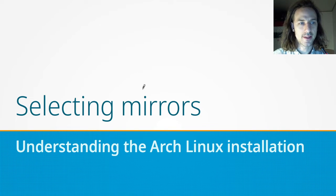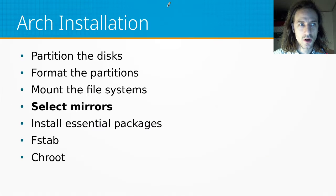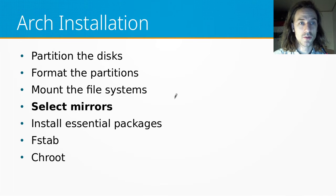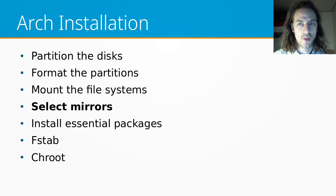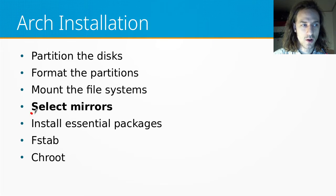So what exactly are mirrors and how do we select them? This is after we already partitioned the disks and formatted these partitions, and all these block devices are mounted to the file system. The next step we should be taking is to install the packages of the operating system to these disks, but before we can do that we have to select where we want to install those packages from.